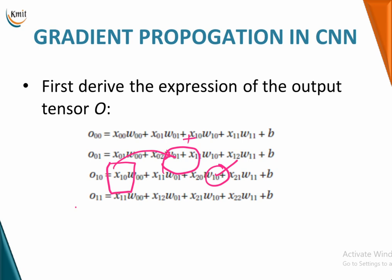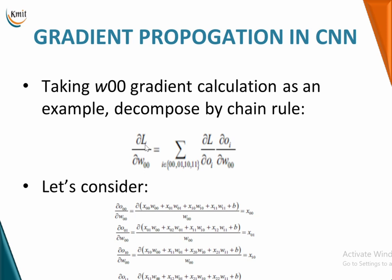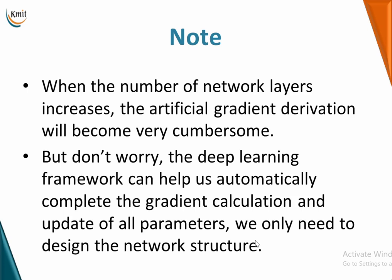Similarly, we calculate all four outputs. To compute the gradient, we take the derivative of the loss with respect to the parameters — the weights and biases — using the chain rule. For example, ∂output/∂W₀₀ gives X₀₀, and ∂output₀₁ gives X₀₁, and so on for all four outputs.